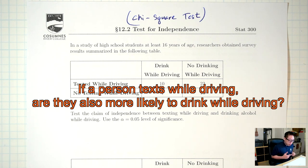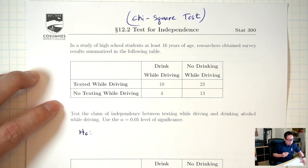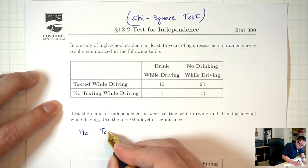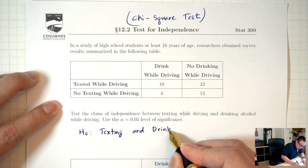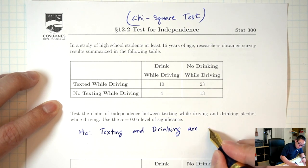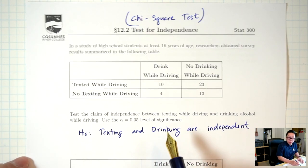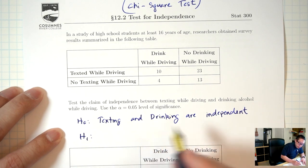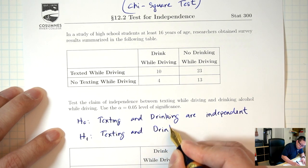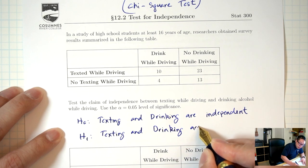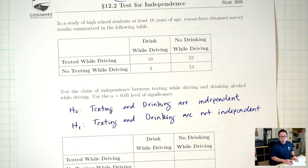So let's start off with what the correct H0 and H1 for a test of independence should be. H0 is going to say that texting and drinking are independent — in other words, they have nothing to do with each other. H1 is going to say texting and drinking are not independent; in other words, they are related to each other.